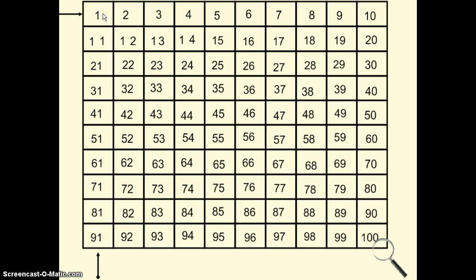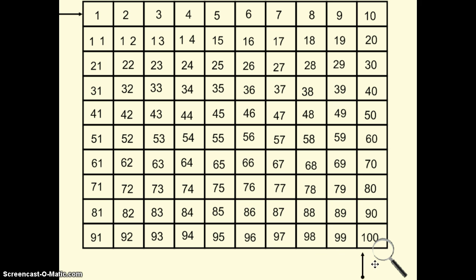The numbers going up and down are called columns. A hundreds chart is also made up of ten columns going up and down — one, two, three, four, five, six, seven, eight, nine, ten. Ten rows of ten, or ten columns of ten, give us 100 boxes on a hundreds chart.